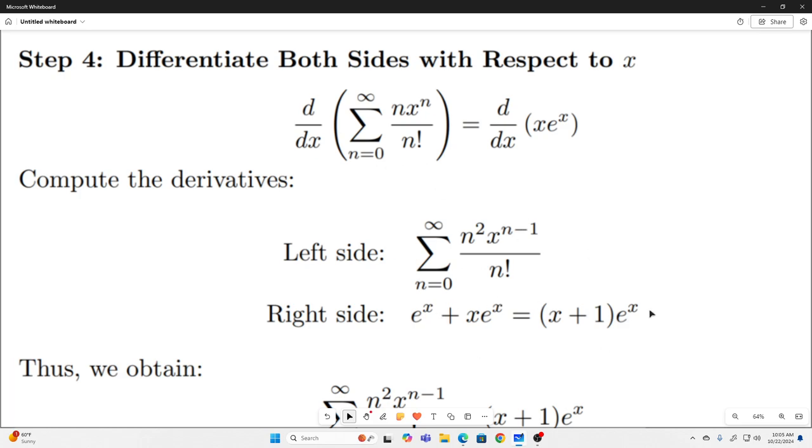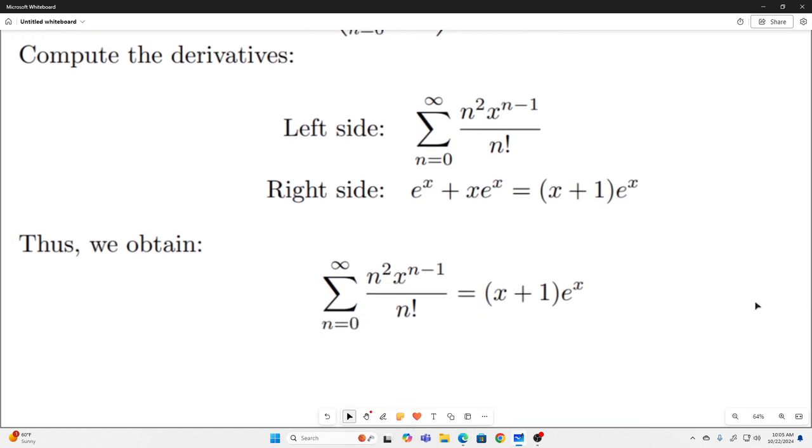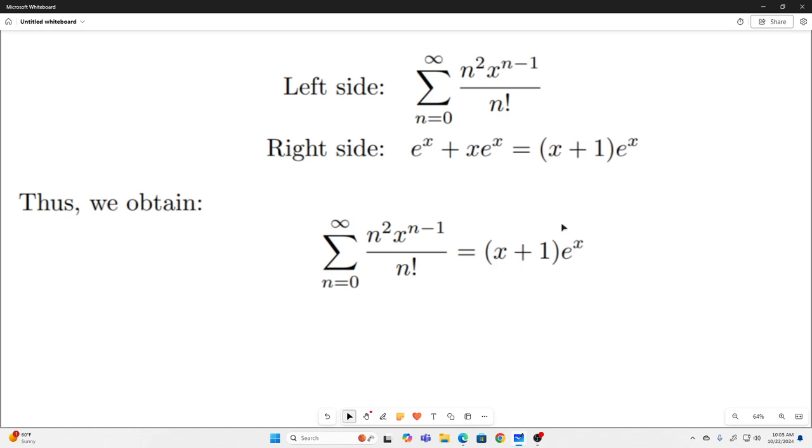Differentiating the right-hand side using the product rule and then simplifying gives us this. So we eventually obtain this.